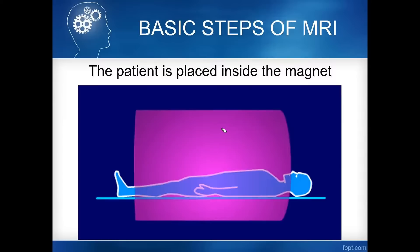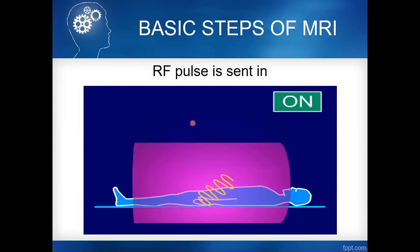The strength of the magnetic field affects precession speed — the stronger the magnetic field, the faster the precession. During RF pulse send-in, resonance occurs. Resonance only happens when the radio frequency you supply matches the precession frequency of the hydrogen proton.